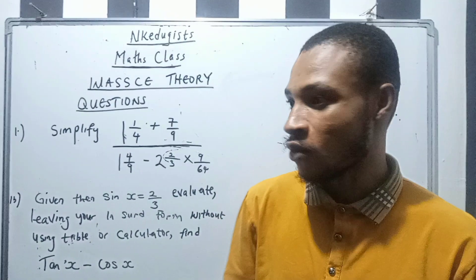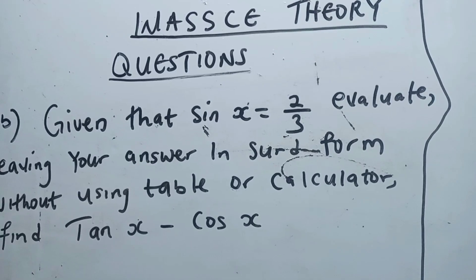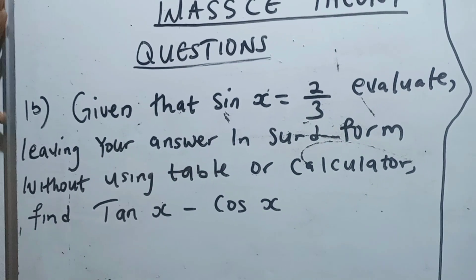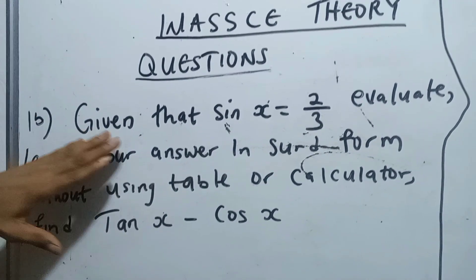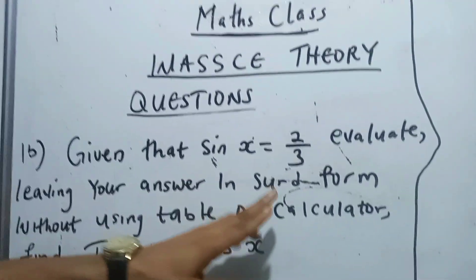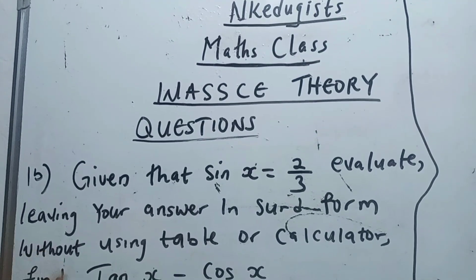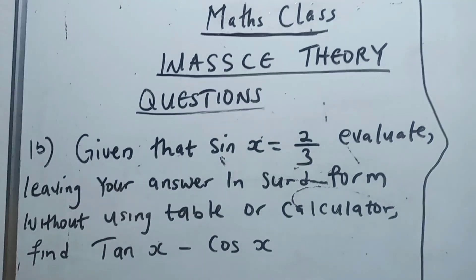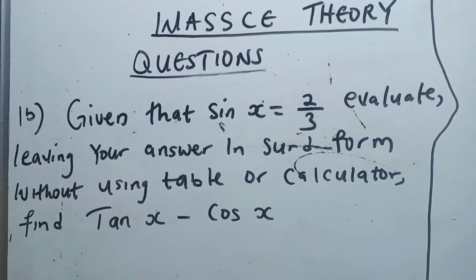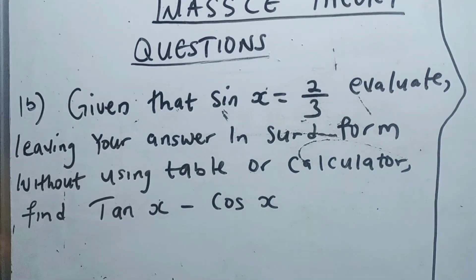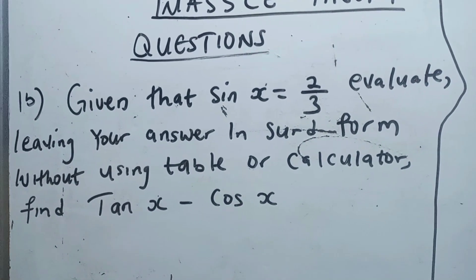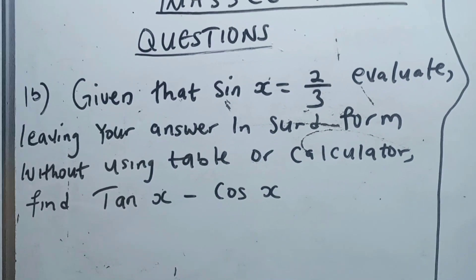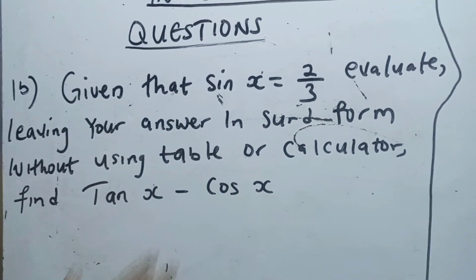Now let's go to the board to solve these questions. This is a trigonometry ratio question. Given that sin x equals 2 over 3, evaluate leaving your answer in surd form — so your answer should be in surd form without using a table or calculator. Find tan x minus cos x.